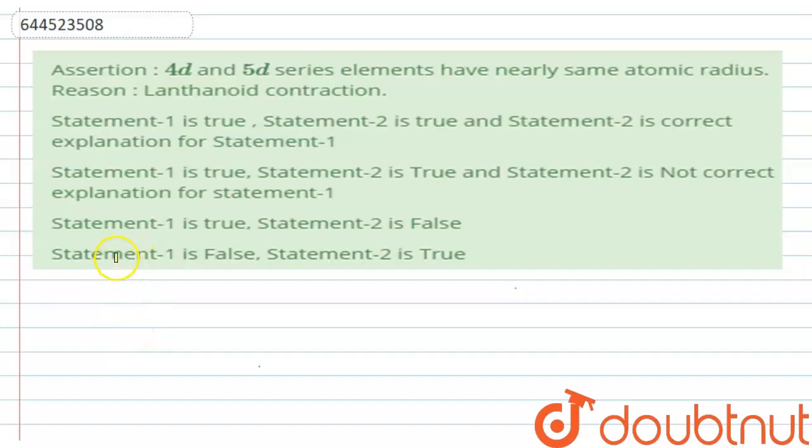First of all, the question here is of assertion and reasoning. The assertion says that 4d and 5d series elements have nearly same atomic radius, and the reason given is lanthanoid contraction.